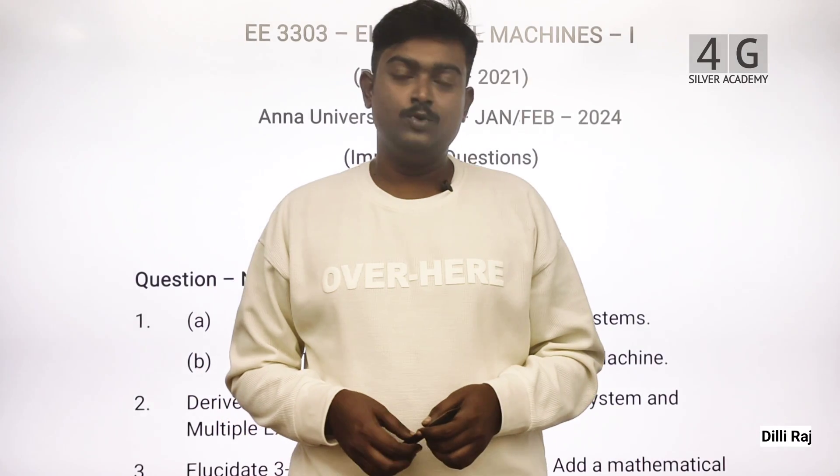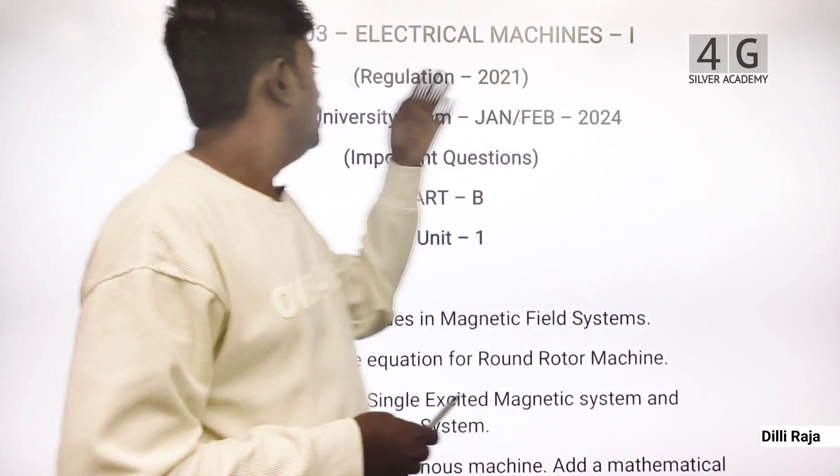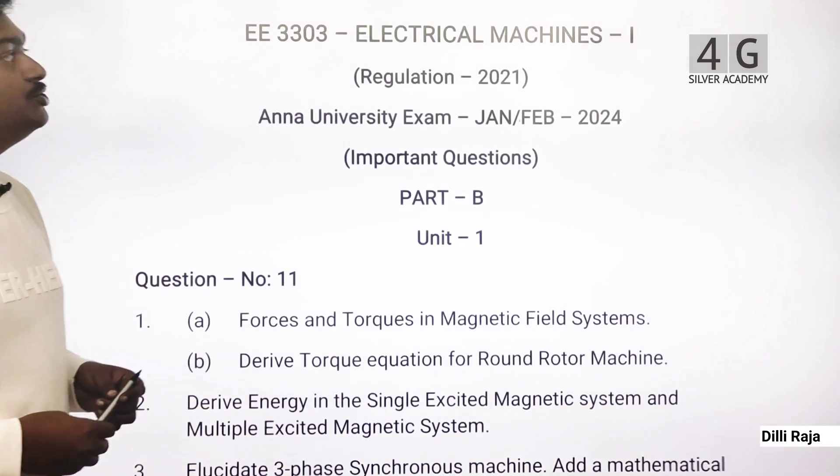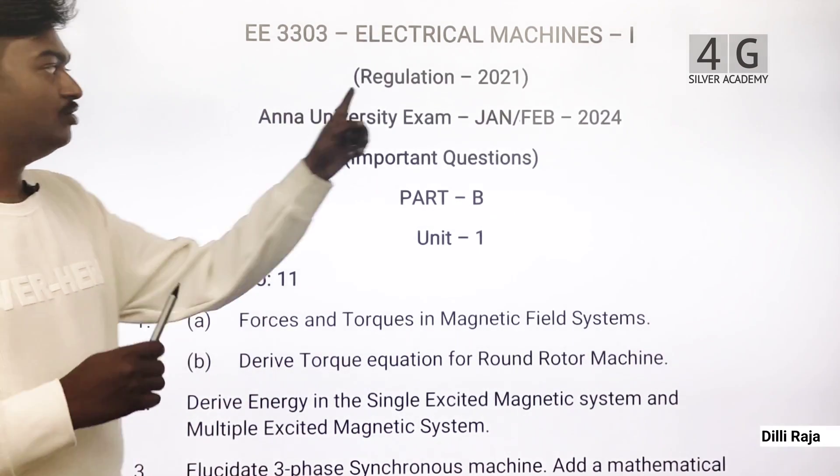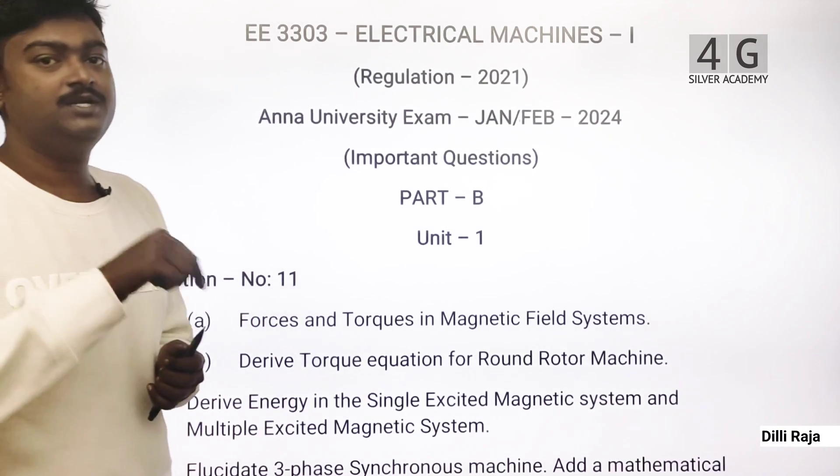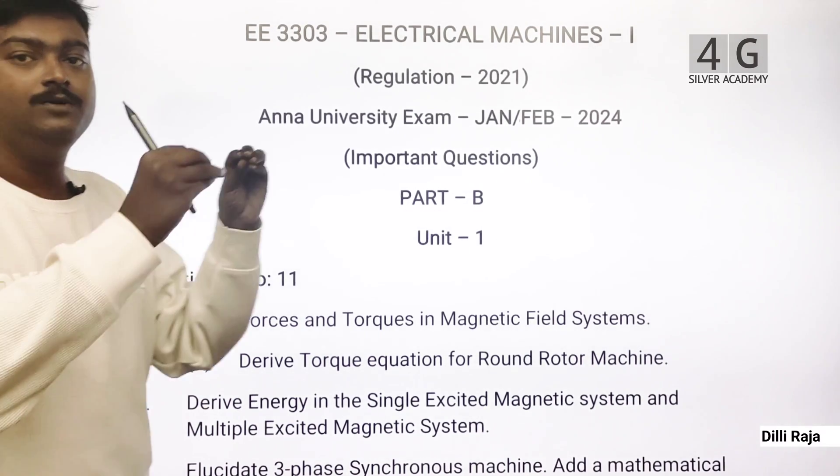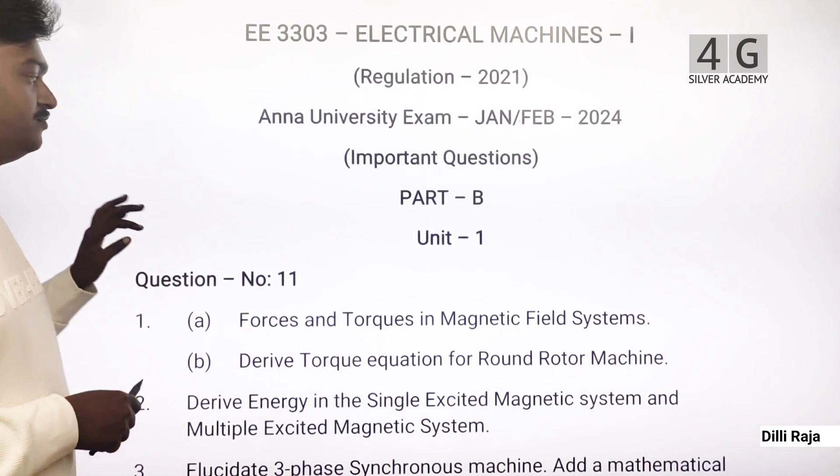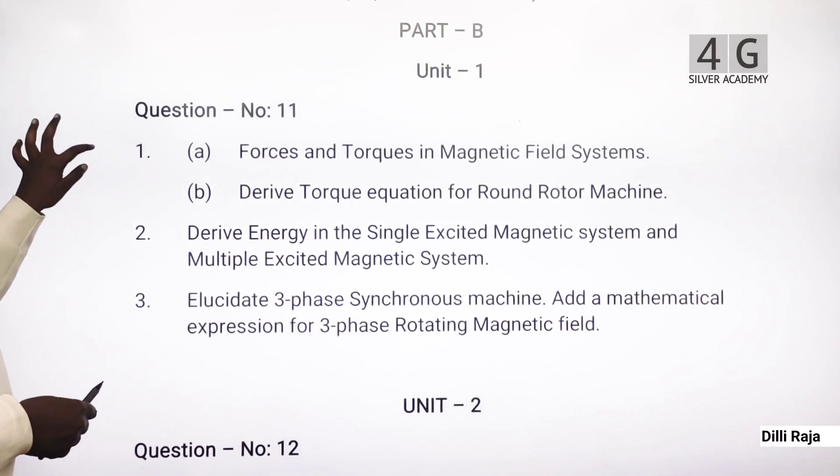Welcome students, welcome to 4G Silver Academy Tamil. In this video, we're covering EE 3303 Electrical Machines 1, Regulation 2021. This is for the Anna University exam, January February 2024. We'll go through important questions for Part B, starting with Unit 1.